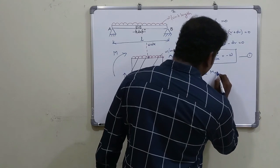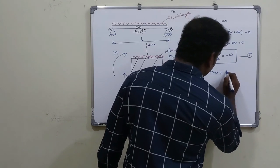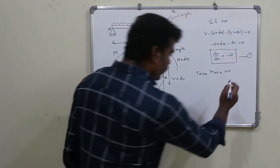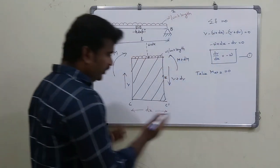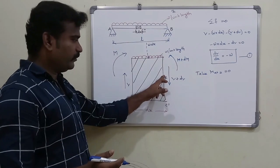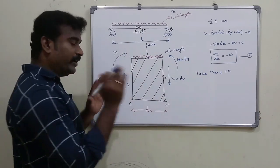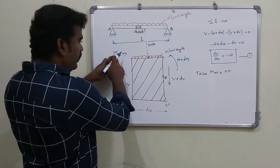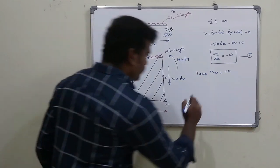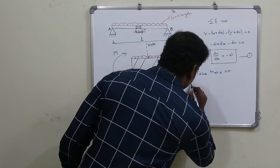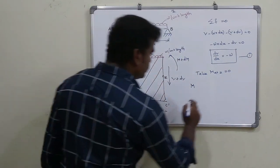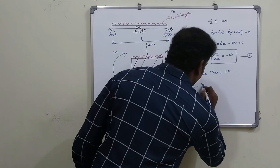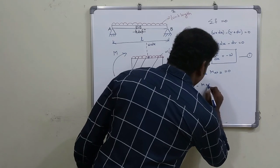Moment at z is equal to zero. We have moment M as anticlockwise, so we write plus M. Then minus (M plus dM) — this is the anticlockwise convention giving minus M plus dM.